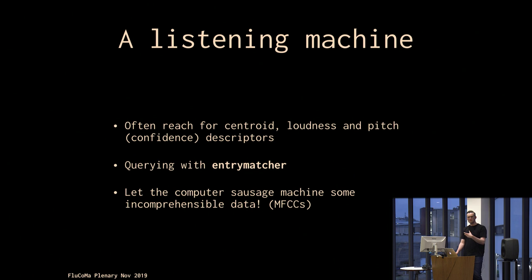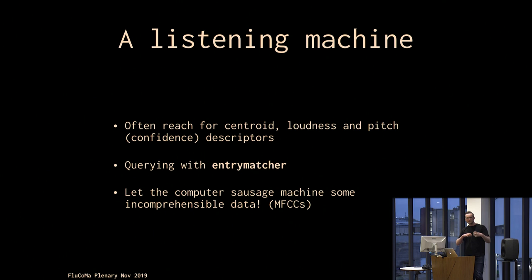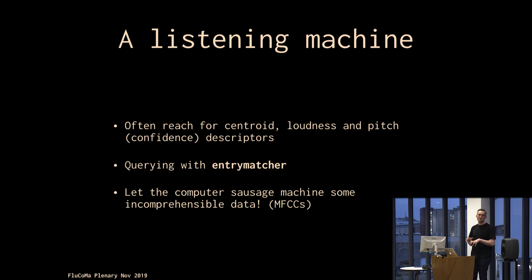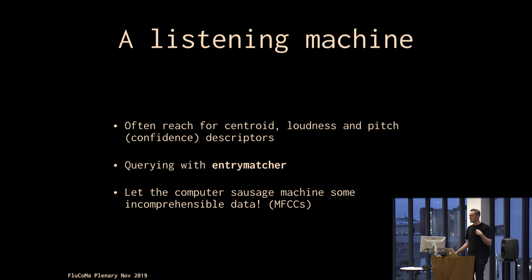I often reach for things like centroid, loudness, maybe confidence as a dirty noise descriptor, then use Alex's entry~match object to query a two- or three-dimensional space. I'd done this in other projects and it was okay, but I found myself falling back into familiar patterns — all the interesting stuff is at the edges of the space: high centroid, low or high amplitude. In the middle there's not much. That's my own taste projecting onto the process, but I have to deal with that.